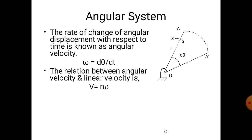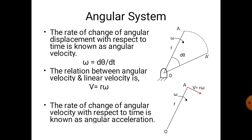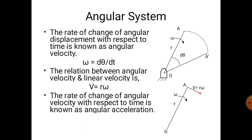The linear velocity, also known as the tangential velocity, is perpendicular to the link. In this case it is perpendicular to OA and acts in the direction of rotation or acts in the direction of angular velocity omega. The rate of change of angular velocity with respect to time is known as angular acceleration, given by alpha equals d omega by dt.